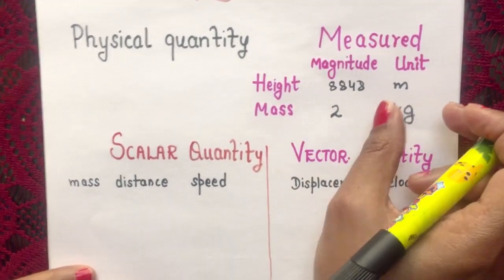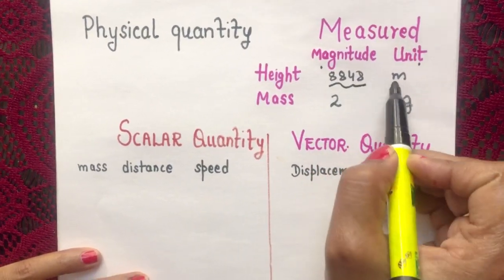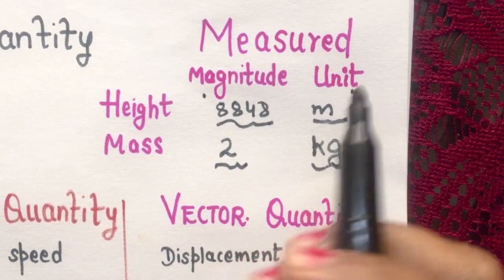Physical quantity is expressed in two parts. You have magnitude and unit. Magnitude is usually a number.